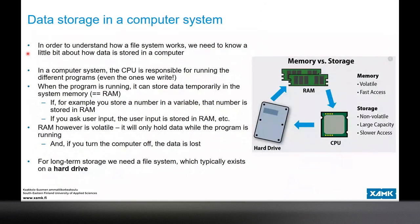To understand how files and file systems work, we need to know a little about how data is stored in computers. The key components of every computer system usually revolve around the central processing unit, the hard drive, and some system memory called RAM - Random Access Memory. These three components form the backbone of all computers, and this organization has pretty much stood unchanged since the 1950s or 1960s.